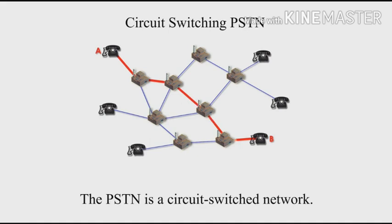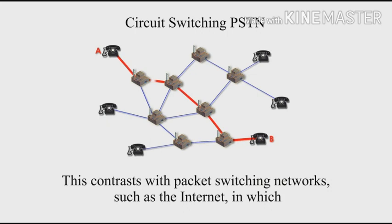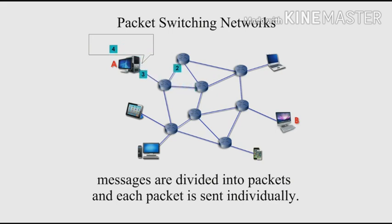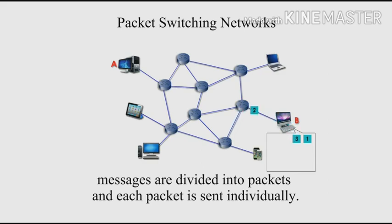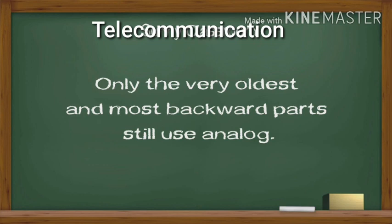The PSTN is a circuit-switched network. A dedicated circuit is established for the duration of a telephone call. This contrasts with packet-switching networks such as the internet, in which messages are divided into packets and each packet is sent individually. Originally, PSTN was only an analog system, but it is now almost entirely digital. Only the very oldest and most outdated parts still use analog.